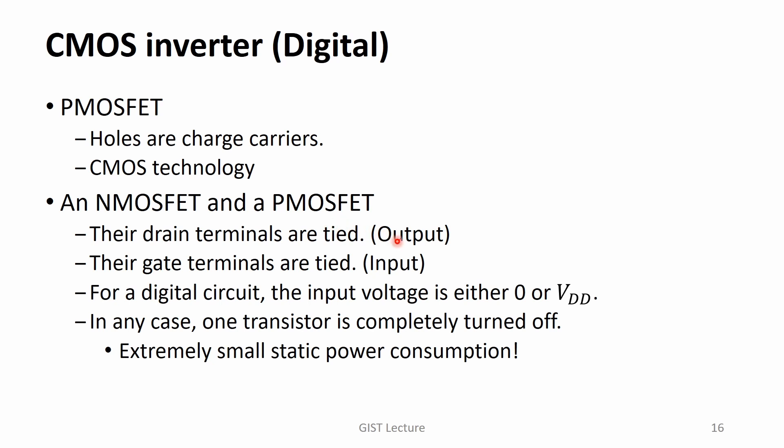An N-MOS and P-MOS are connected through their drain terminals. The drain terminal voltage is used as an output. Also, their gate terminals are connected and used as the input terminal. With the input voltage of zero volt or maximum available voltage VDD, one transistor is turned on and the other is completely turned off. Therefore, the static power consumption is extremely small.